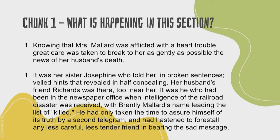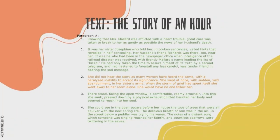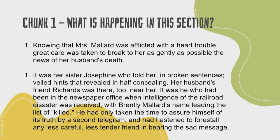Let's start with my first chunk of the text, which is green on this slide — I've blown it up a bit bigger. My question as I read this is: what do I see happening in just this part of the story? This is paragraph one and paragraph two, which together make my first chunk. I'm going to read it, and as I'm reading, start absorbing what you see happening. "Knowing that Mrs. Mallard was afflicted with heart trouble, great care was taken to break to her as gently as possible the news of her husband's death. It was her sister, Josephine, who told her in broken sentences, veiled hints that revealed in half-concealing."